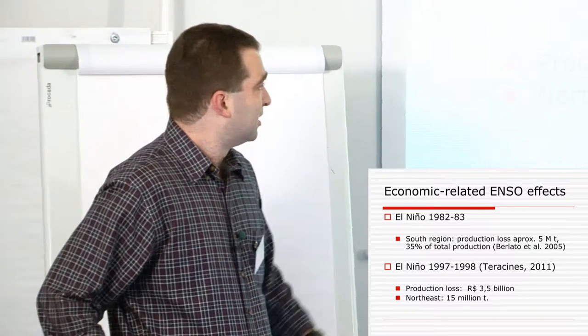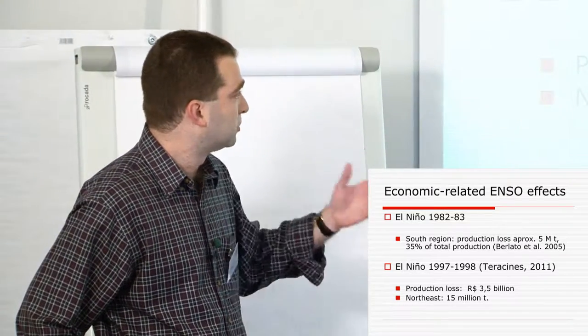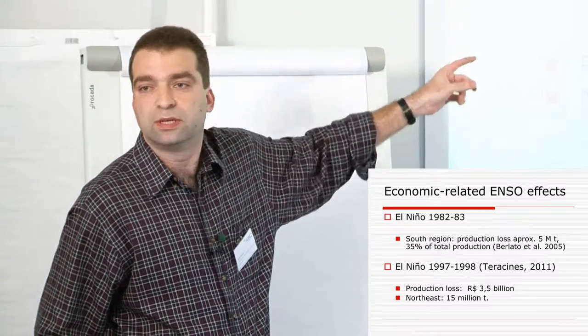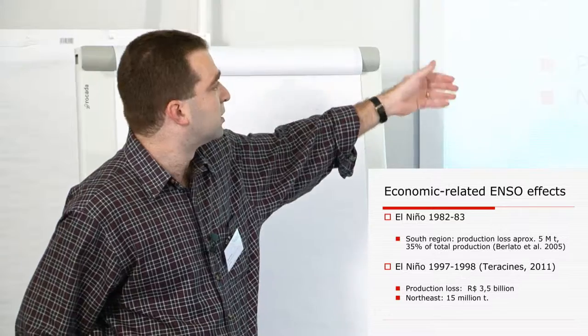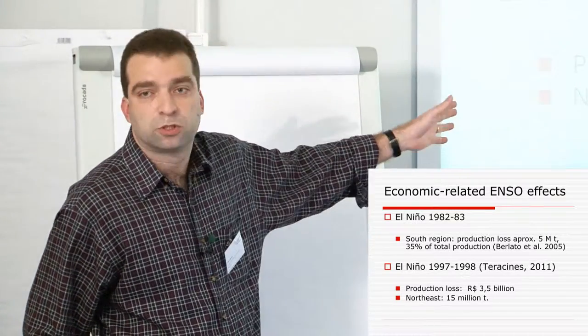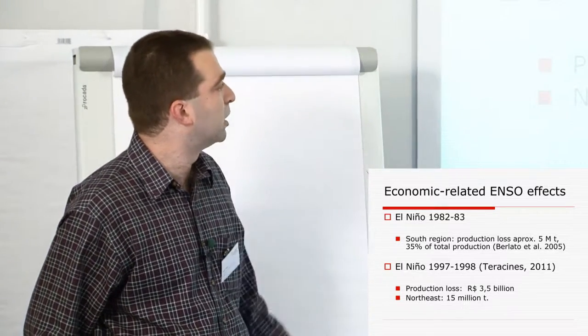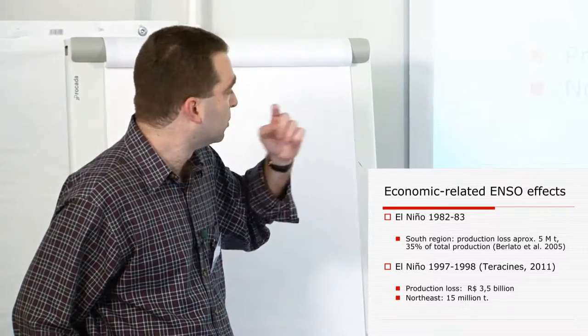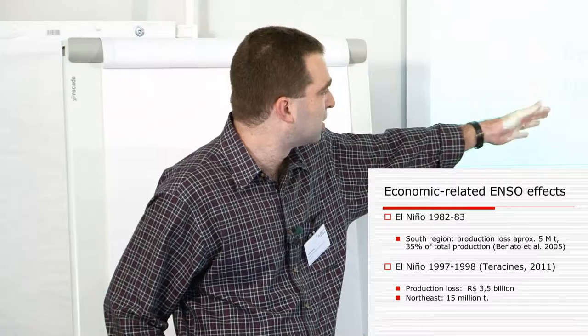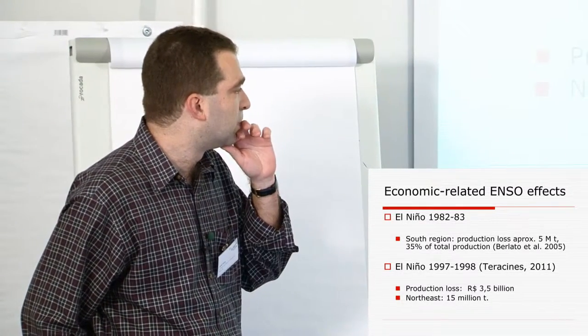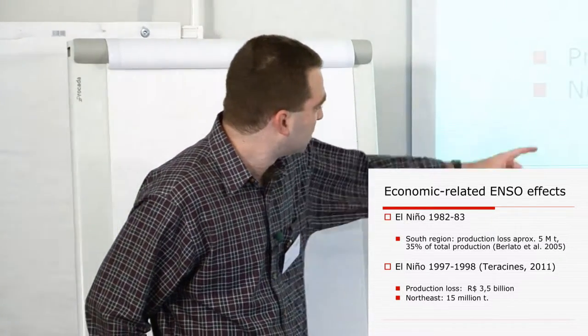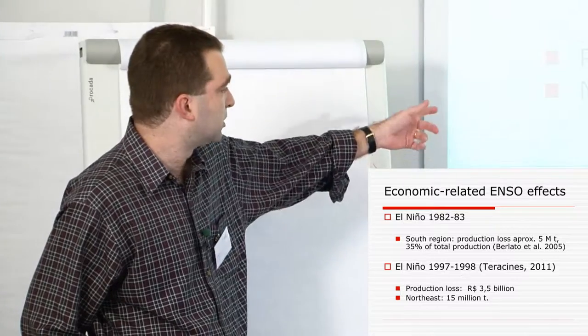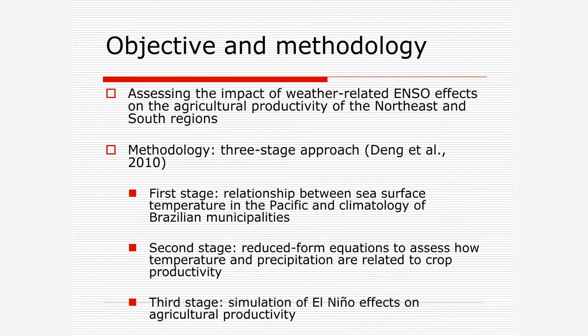Just to give an idea of the impact in economic terms to agriculture in Brazil: during one of the most severe El Niños from the last century, in 1982-83, in the South region there was a production loss of more than 5 million tons, and that corresponds to approximately 35% of total regional production. So what we try to do in this paper is to assess the impact of weather-related ENSO effects on agricultural productivity in these two regions that are the most vulnerable to ENSO effects.